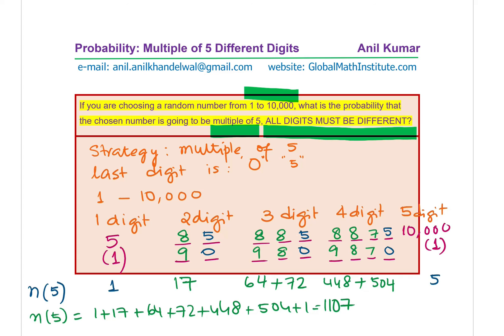And clearly then, what is the probability? Well, in that case, the probability for getting five without repetition should be the ratio of these two, which is 1107 divided by 10,000. So that is how we are going to answer this particular question. Our answer is that the probability will be 1107 divided by 10,000.